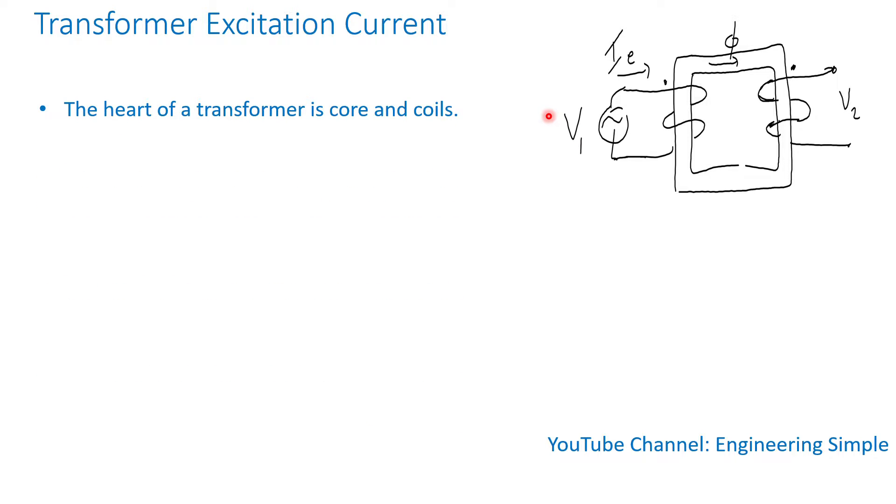The heart of a transformer is core and coils. The core is made from magnetic steel basically to contain the flux.